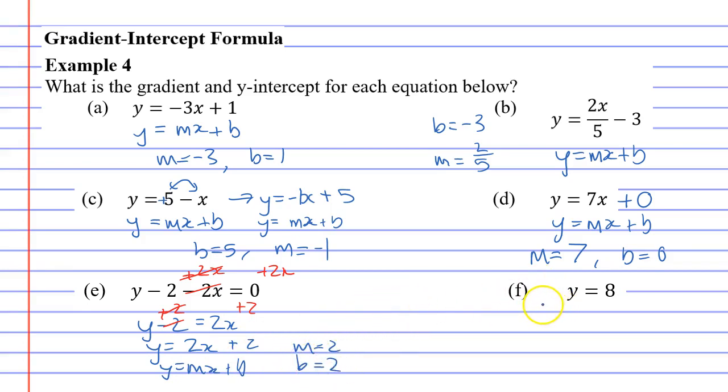Last question, question F. It just says y equals 8, and I'm going to rewrite that as y equals 0x plus 8, because if you have 0x's, you wouldn't normally write 0x there. Then when you do your gradient intercept formula, you can see your gradient is 0 and your y-intercept is 8.